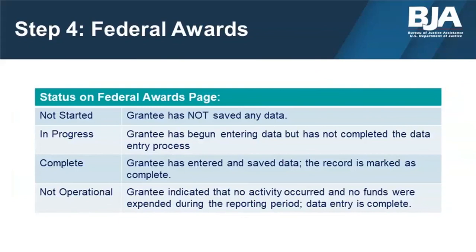Before getting into the specifics of PMT data entry, it is important to understand the different statuses on the Federal Awards page. If a grantee has not opened their report or saved any data, the PMT will mark it as not started. If a grantee has begun data entry but has not completed all of the questionnaire, the report will be marked as in progress. If a grantee has entered and completed every question and saved the results, the PMT will mark the record as complete. Not operational applies to grantees that indicated there was no grant-funded activity and no funds were expended during the three-month reporting period. Grantees who have subrecipients will be affected by their subrecipients' report status as well.